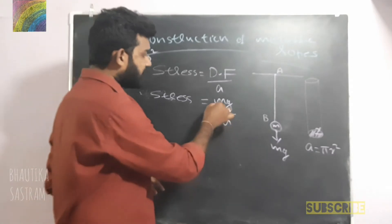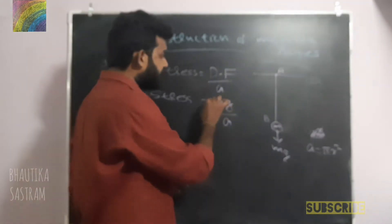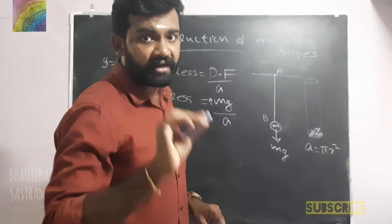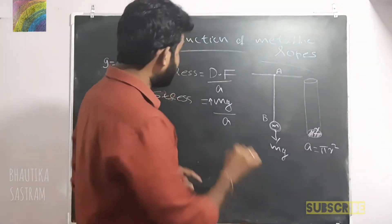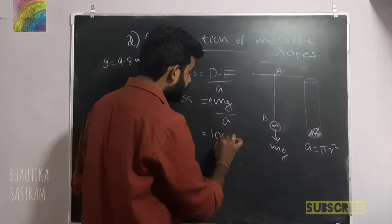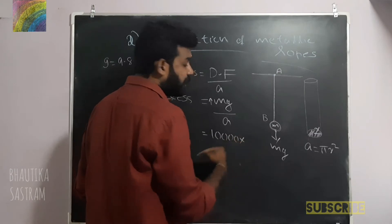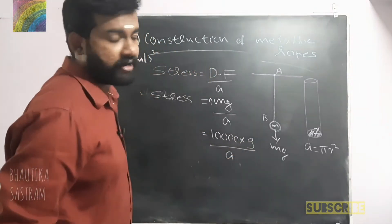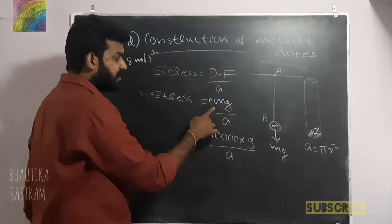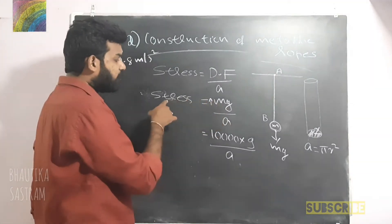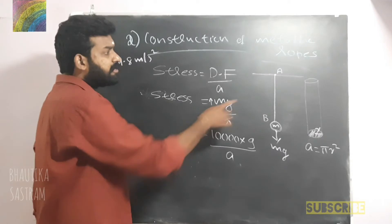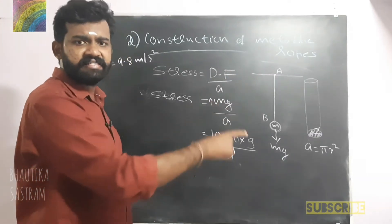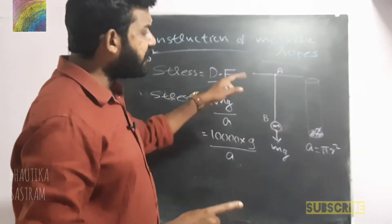If mass increases, then we can increase our weight. Stress is equal to Mg divided by area. Now the stress involves the mass. If we have this metallic wire, the strength is the maximum stress.